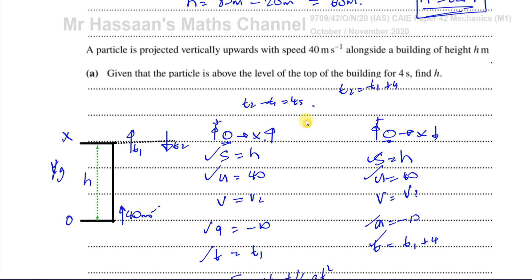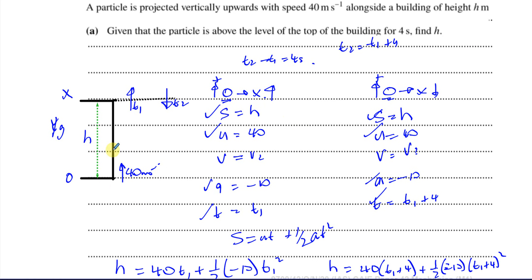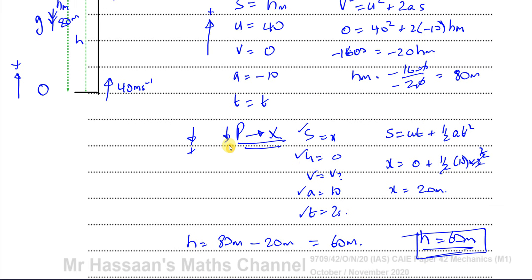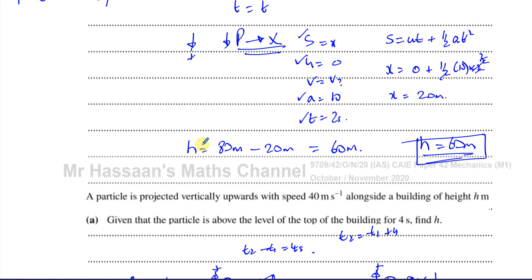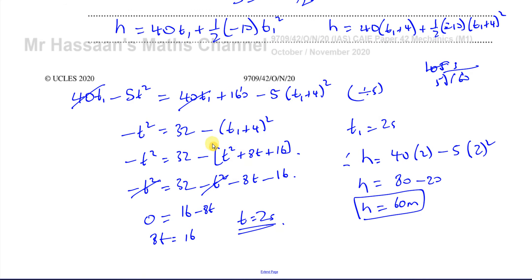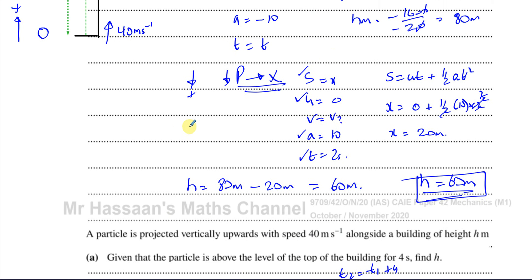It's important to understand that displacement means how far out of position it is, not the distance traveled. So the time it took to get to level X on the way up and the time on the way down will have the same displacement H, even though the times are different. So there's part A done. I've gone a bit longer than intended because I want to show different ways of answering and give a good understanding.